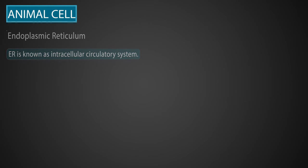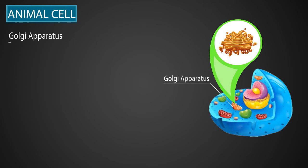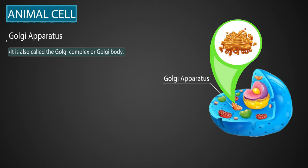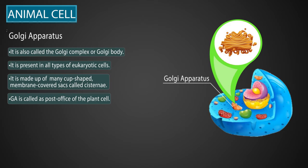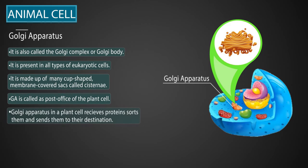Next is the Golgi apparatus, or GA, also sometimes called the Golgi complex or Golgi body. It is present in all types of eukaryotic cells and is made up of many cup-shaped membrane-covered sacs called cisternae. The GA is called the post office of the cell — just as a post office receives letters, sorts them, and sends them to their destinations, the Golgi apparatus receives proteins, sorts them, and sends them to their destination inside or outside of the cell.